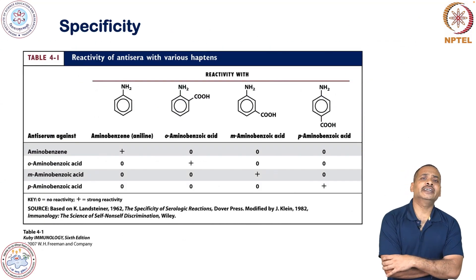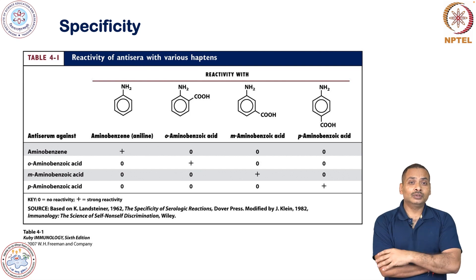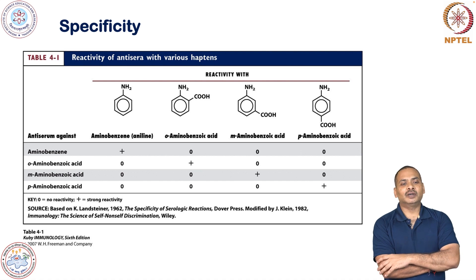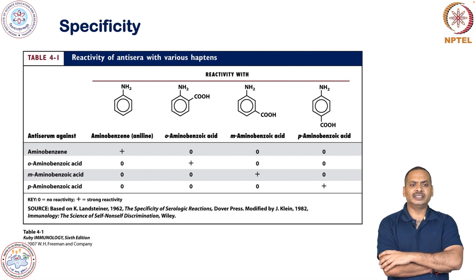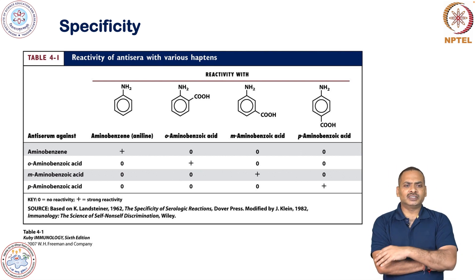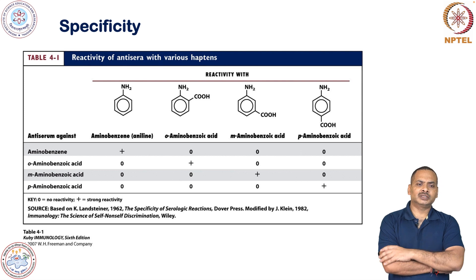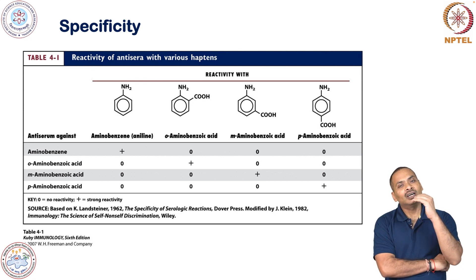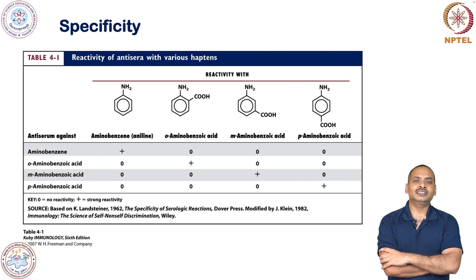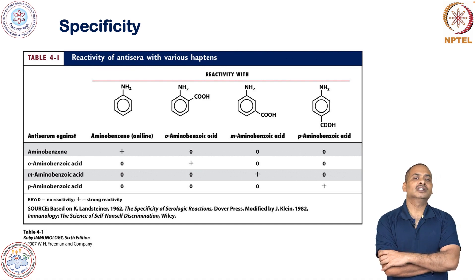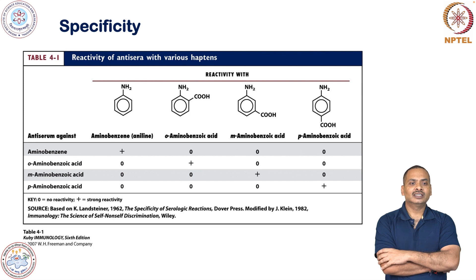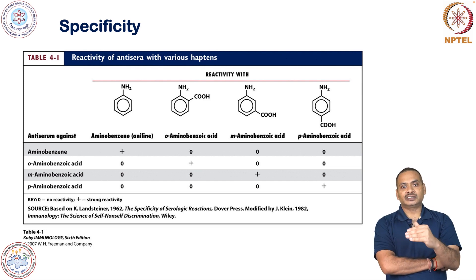Now I will demonstrate that adaptive immunity is highly specific, by a simple experiment conducted by Carl Landsteiner in 1962. The aim was to show the specificity of serological reactions. What he did: he conjugated organic entities — here you can see amino benzene, which is aniline. He also immunized different groups of animals with ortho amino benzoic acid, meta amino benzoic acid, and para amino benzoic acid.